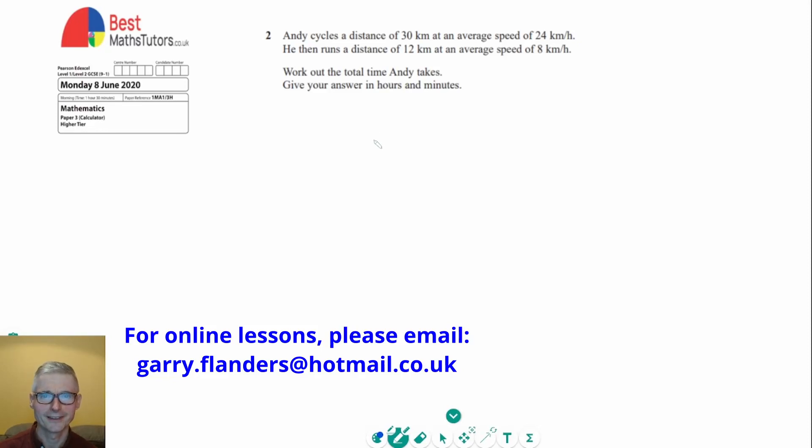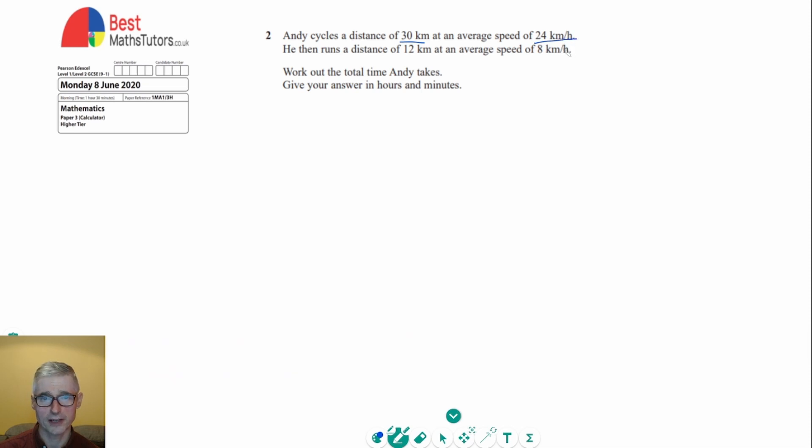Question two involves distance, speed, and time. Andy cycles a distance of 30 kilometers at an average speed of 24 kilometers an hour, then runs a distance of 12 kilometers at an average speed of 8 kilometers an hour. We need to work out the total time that Andy takes and give the answer in hours and minutes.